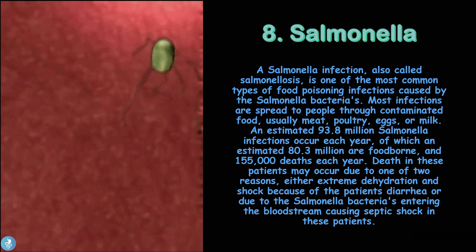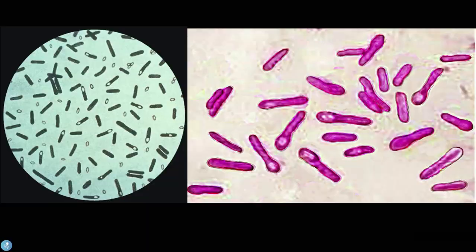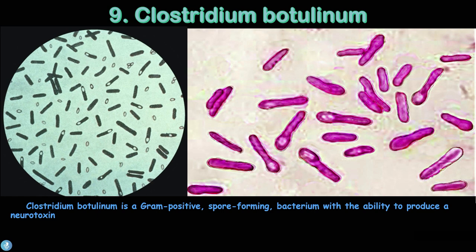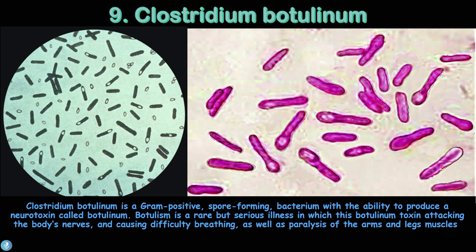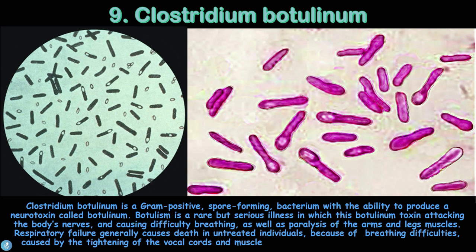Number nine is Clostridium botulinum, a gram-positive spore-forming bacterium with the ability to produce a neurotoxin called botulinum. Botulism is a rare but serious illness in which the botulinum toxin attacks the body's nerves, causing difficulty breathing and paralysis of the arms and leg muscles. Respiratory failure generally causes death in untreated individuals, as the infection causes life-threatening breathing problems through tightening of the vocal cords and muscle rigidity in the neck and abdomen.